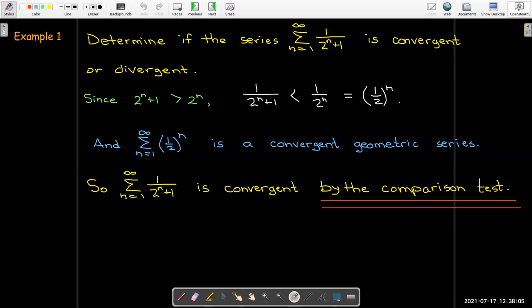So here, I put it down. We're using the comparison test. In fact, I've shown all the work that's necessary for the comparison test. So I said that this is convergent by the comparison test. And what else do I need to know? It's smaller than a convergent geometric series.